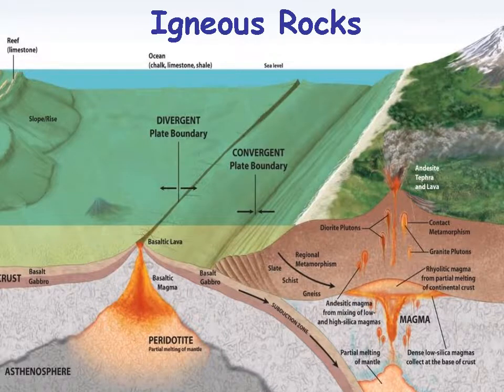Let's look at this model, where we have the divergent boundary where we have basaltic magma that is being derived from the mantle. As the plates pull apart, that basaltic lava fills in that plate boundary. As it cools, it forms basalt on the surface where it cools quickly, and gabbro, which is the same composition as basalt but has larger crystals underneath. The floor of the ocean is made up of basalt and gabbro — a dark, heavy, dense rock.